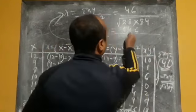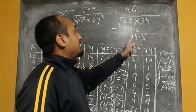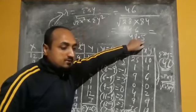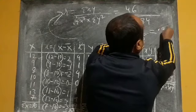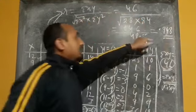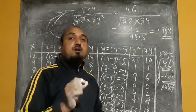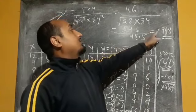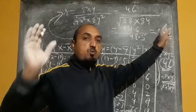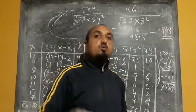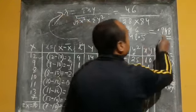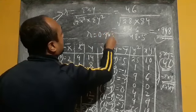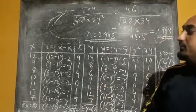Dividing 46 by 48.5, we get r equals approximately 0.948. Recall that the value of r must lie between minus 1 and plus 1. Since 0.948 is less than 1, it is acceptable. If the value came out as 2, 3, or 4, then your calculation would be wrong. So the answer is r equals 0.948, and this is the value of Karl Pearson's correlation coefficient.